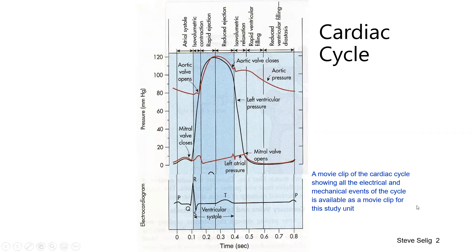This slide shows in detail the cardiac cycle, and there's a movie of this available on the VUER website in the student area only for this study unit. Just to outline how this is laid out: the top series of three graphs are related to aortic pressure in red, left ventricular pressure in black, and left atrial pressure in red. The ECG is then lined up underneath that with the relative timings — very important.